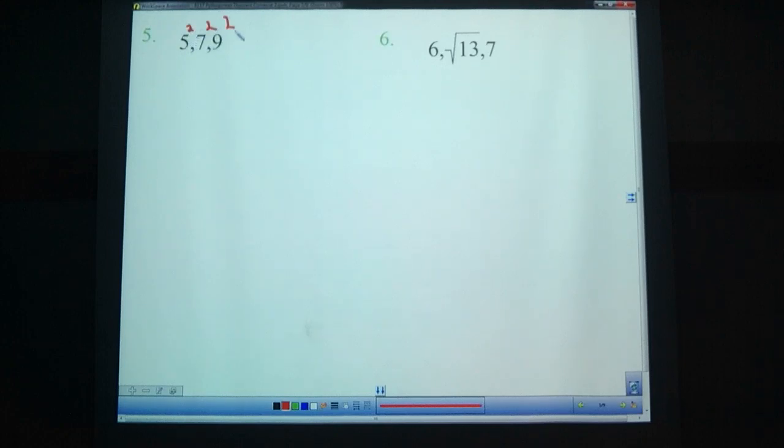I like to square all three of them first. That gives us 25, 49, and 81. Then whatever the two smaller ones are, add them up, see if they make the bigger one. So 25 plus 49, that's 74. Does 74 equal 81? No, it does not. So this is not a right triangle. Not right.